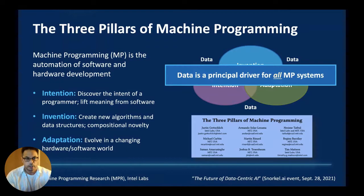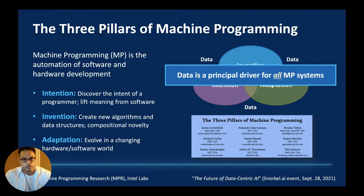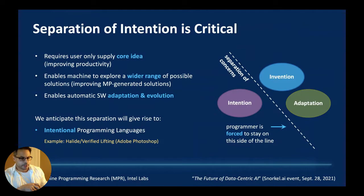As with other talks today, the fourth hidden pillar in the three pillars of machine programming is all about data. Data is the essential element for all these machine learning systems, and for machine programming as well — there is not a single machine programming system I'm aware of that does something interesting without some form of data. We'll talk about how to get around some of the data issues that exist in this space.